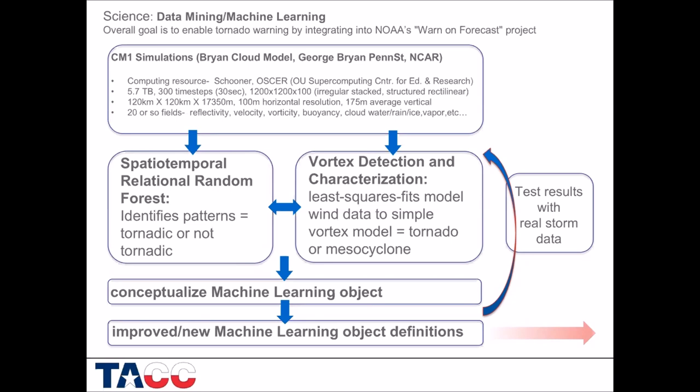The output from these storms is then fed into two programs. Amy's is the one on the left — the spatio-temporal relational random forest. Corey's is the one on the right — the vortex detection and characterization. If you're interested in their code, I can send you links. The idea is that they use these programs to identify patterns in the data and then relate that to whether that particular hypothetical storm spawns a tornado or not.